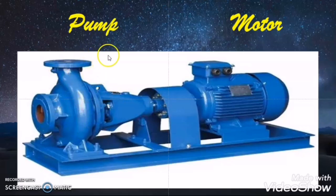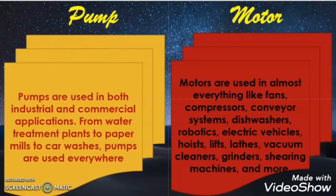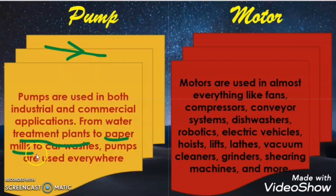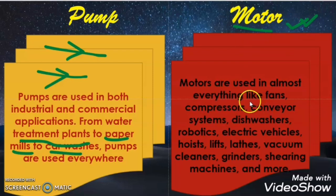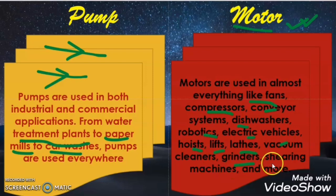Let us see the applications of pump and motor as the last difference between them. A pump is used wherever we need to move fluids from one place to another with pressure — such as in water treatment plants, power plants, paper mills, car washes, and wherever fluid needs to be moved at high speed and high velocity. A motor is used everywhere — it is one of the best inventions in mankind. Motors are used in fans, compressors, conveyors, dishwashers, robotics, electric vehicles, hoists, lifts, lathes, vacuum cleaners, grinders, and many more. Motors are used in infinite places.